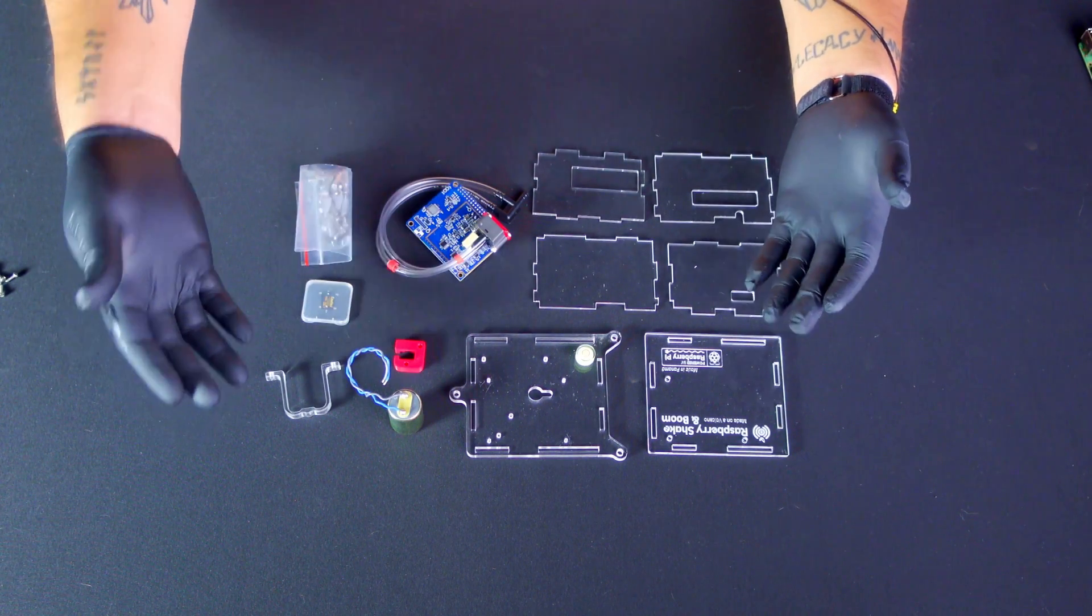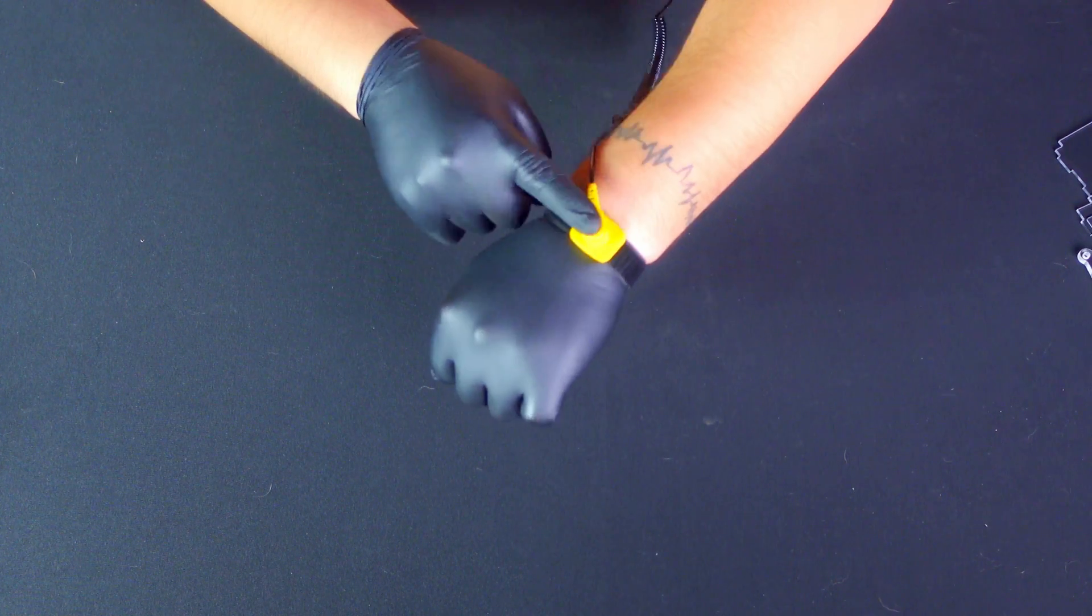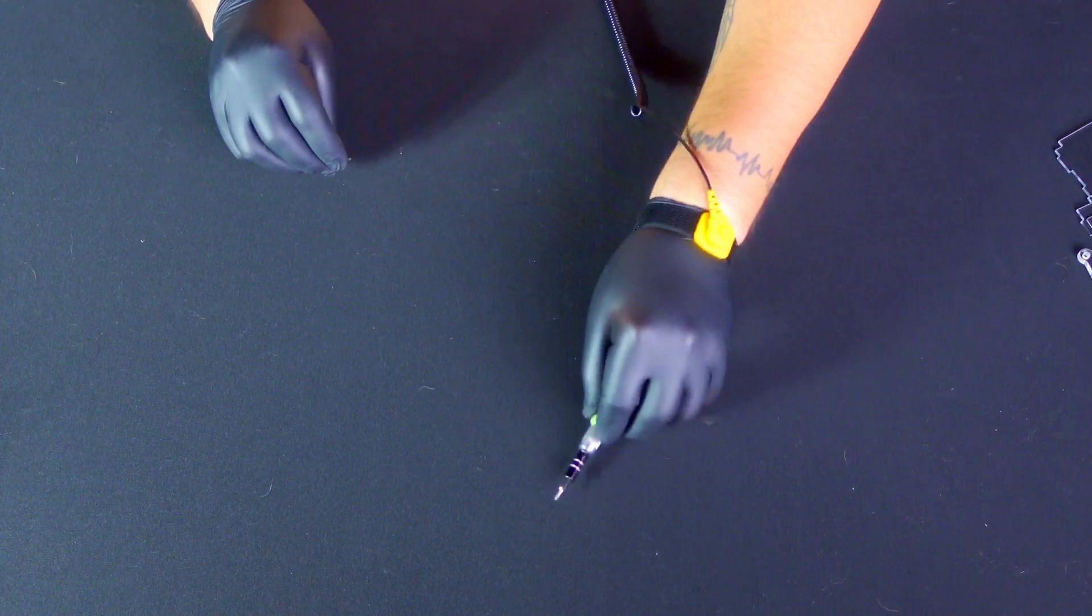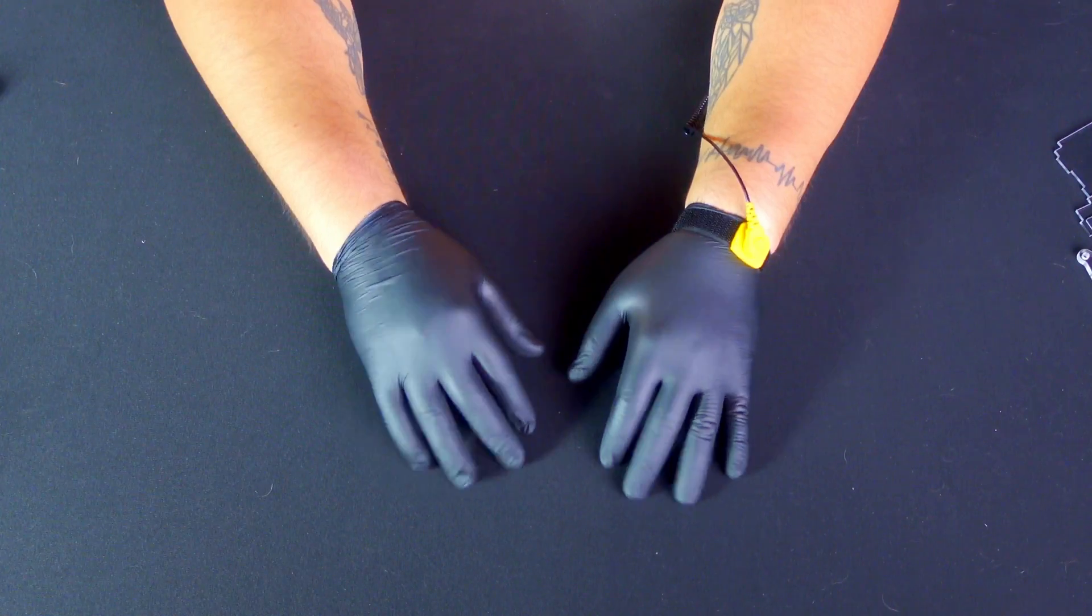Before we begin, make sure you have three essential items on hand: anti-static gloves and an anti-static bracelet, a pair of Phillips screwdrivers, standard and fine point, and of course a Raspberry Pi board which is not included with the DIY kit.